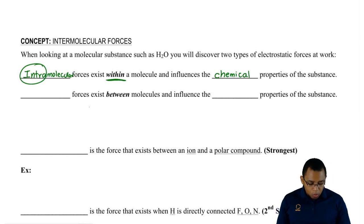If we're drawing water, oxygen goes in the center. It has six valence electrons because it's in group 6A. Hydrogens on the outside because they never go in the center. They have only one valence electron because they're in group 1A and they only make one bond.